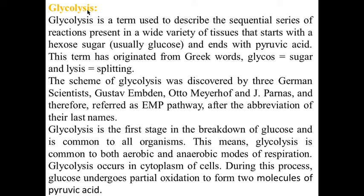Glycolysis — all living organisms, whether aerobic or anaerobic, initiate the mechanism of respiration by breaking down glucose into pyruvic acid without the help of oxygen. This initial process occurs in the cytosol of the cell and completes in 10 different steps. It is called glycolysis. The scheme of glycolysis was first described by Gustav Embden, Otto Meyerhof, and Jacob Parnas in 1930, and thereafter glycolysis is referred to as the EMP pathway.